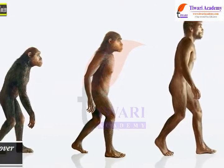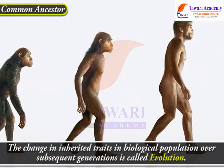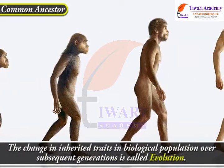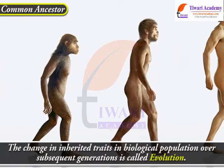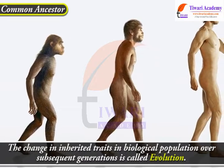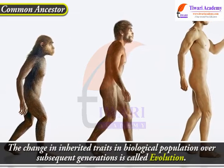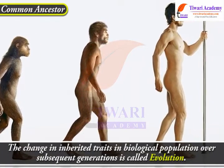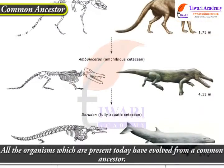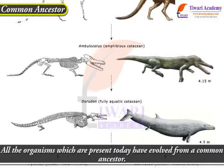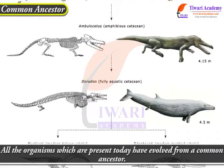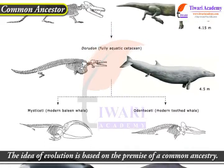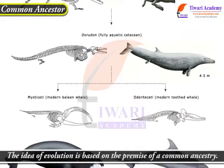The change in inherited traits in a biological population over subsequent generations is called evolution. Scientists have proven that life evolved in the form of simple unicellular organisms on this earth, and all the organisms present today have evolved from a common ancestor. The idea of evolution is based on the premise of a common ancestry.